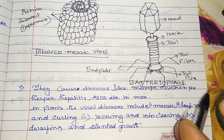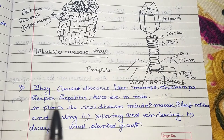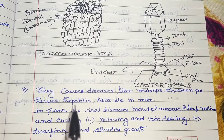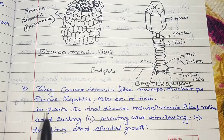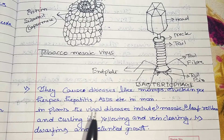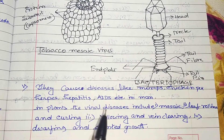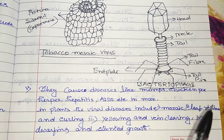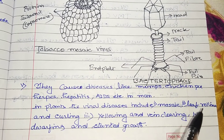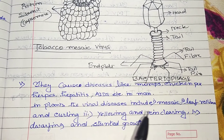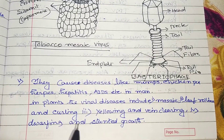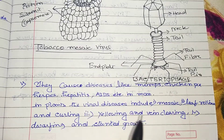In animals, viral diseases include mumps, chickenpox, herpes, hepatitis, and AIDS. In plants, viral diseases include mosaic virus, leaf rolling virus, leaf curling, yellowing and vein clearing, and dwarfing and stunted growth.